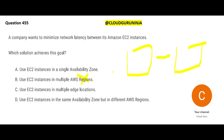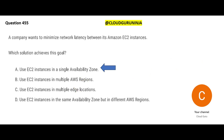Option C says put them in multiple edge locations — one edge location in Hyderabad, another in Bangalore — but that is still far. Option A says put EC2 instances in a single placement group, meaning the same data center, same hardware. If you have multiple EC2 instances on the same hardware there is no network to travel, and that will be the fastest. Option D says EC2 instances in the same AZ but different regions — that is as good as having them in two regions, so they still have to travel that long network path. Option A is the best answer.